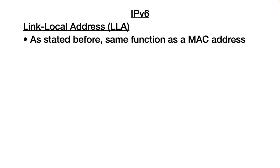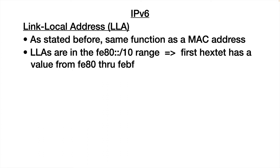Link local addresses are for communicating on the same network — they do not get passed through routers, the same as how MAC addresses work in IP version 4. Link local addresses start with FE80, so the first hextet values will be from FE80 through FE8F:FFFF.